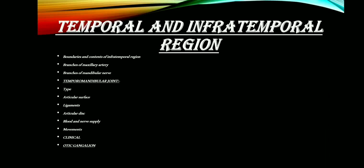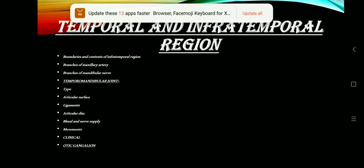Moving on to the next chapter, that is the temporal and the infratemporal region. The various enumerate questions that can be asked are: boundaries and contents of infratemporal region, which is not that important; branches of maxillary artery, which is very, very important; and branches of mandibular nerve, which is also very important. A long question can be asked on the temporomandibular joint, covering the type of joint, articular surfaces involved, ligaments, blood and nerve supply, articular disc, movements, and clinical aspects. A short note on otic ganglion can also be asked.